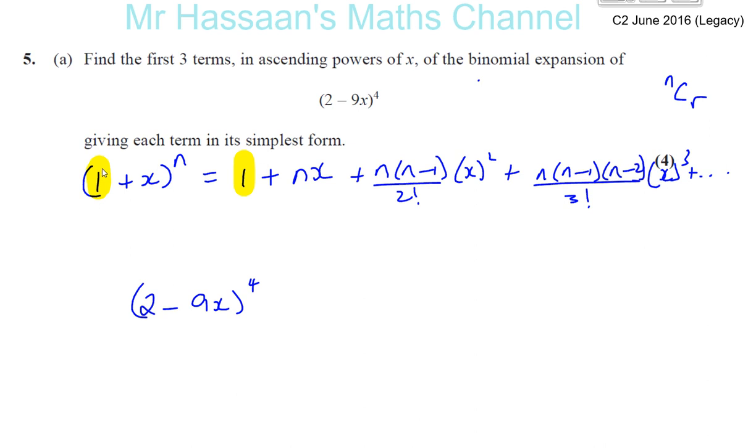But one thing you must be very careful to realize is that this number here in the bracket must be a 1. We must have a 1 in this place, and if there's not a 1 in this place we must make it into a 1. So over here we see we've got a 2, not a 1. So I want to make it into a 1.